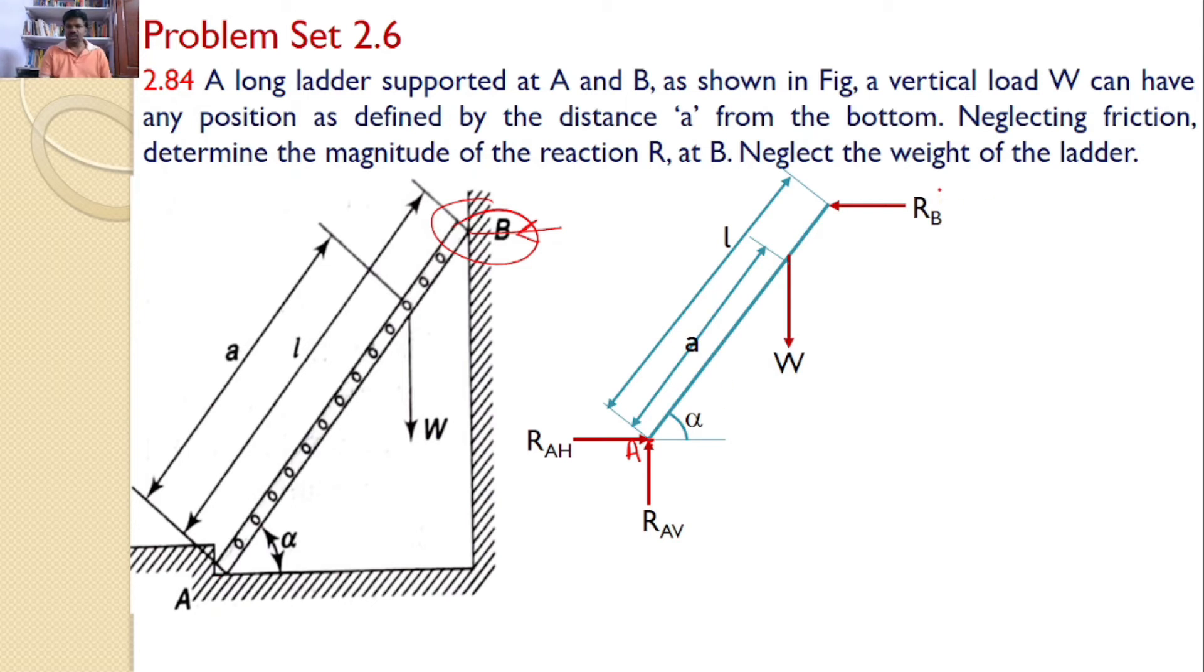Now, our interest is to find the value of R_B. Further, we will take the moments about point A. R_AH and R_AV are passing through the point A, will not introduce any moment. W will create a moment in this direction, that is clockwise, and R_B will give a moment in the counterclockwise direction.